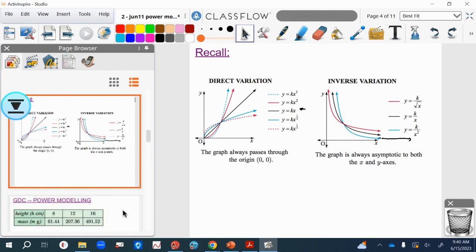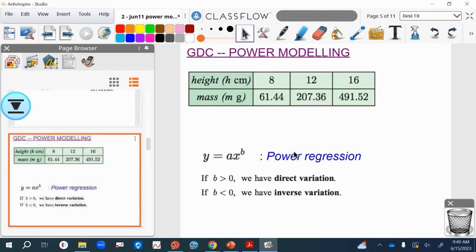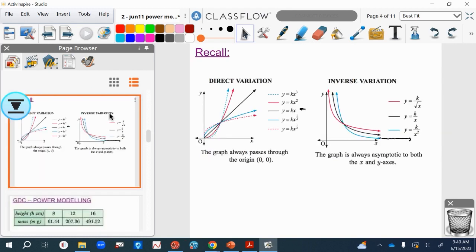What we should see is that with power regression, if the value here of b is positive, then it's going to be direct variation, and if it's negative, it will be inverse variation. We can see that from these graphs here.